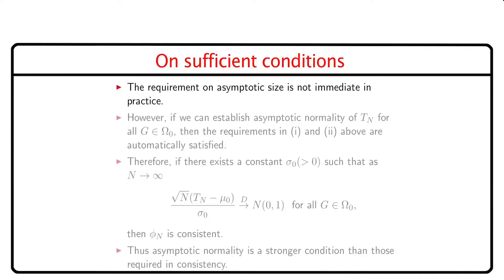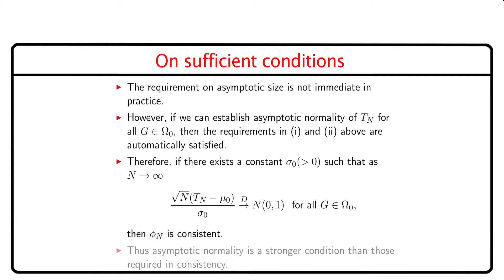However, the requirement on asymptotic size is not immediate in practice. But if we can establish asymptotic normality of tₙ for all g belonging to Ω₀, then the requirements in conditions one and two above are automatically satisfied. Therefore, if there exists a positive constant σ₀ such that as n tends to infinity, √n(tₙ − μ₀)/σ₀ converges in distribution to Normal(0,1) for every g specified by the null hypothesis, then φₙ is consistent. Thus, asymptotic normality is a stronger condition than those required in consistency.